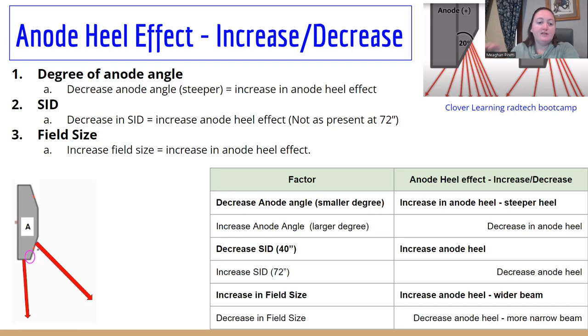If it's a femur, the hip end is thicker than the knee end. You would put the thicker, denser parts under the cathode part of the beam.